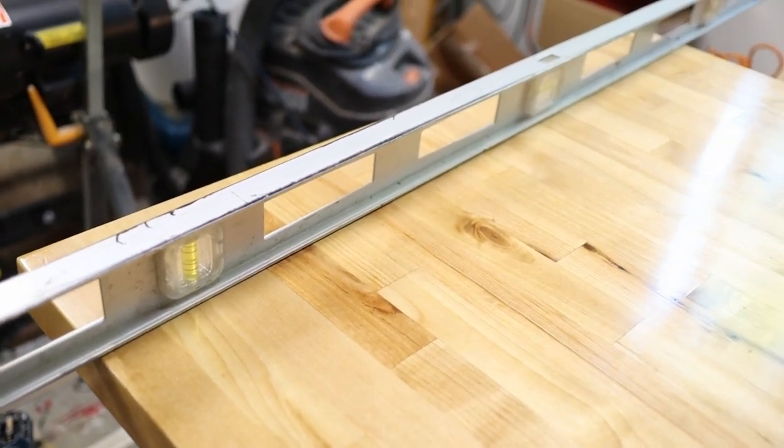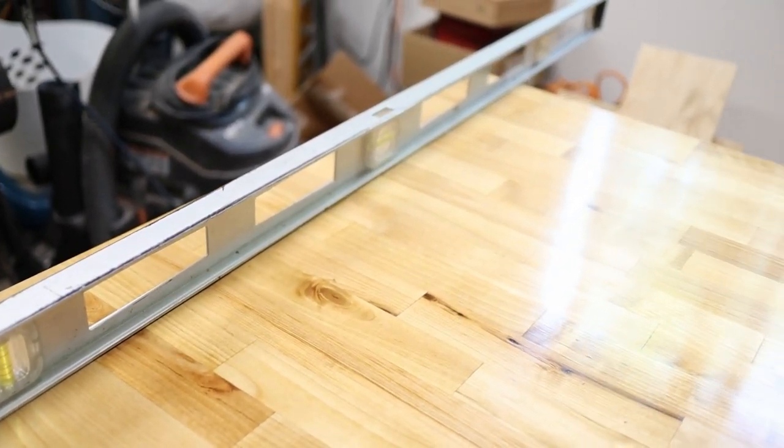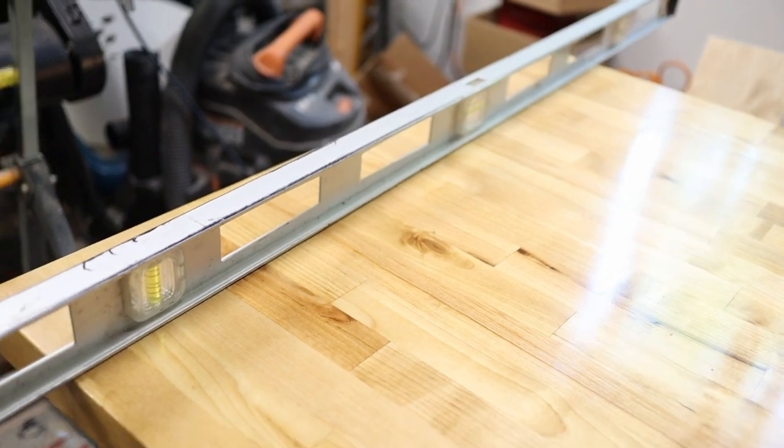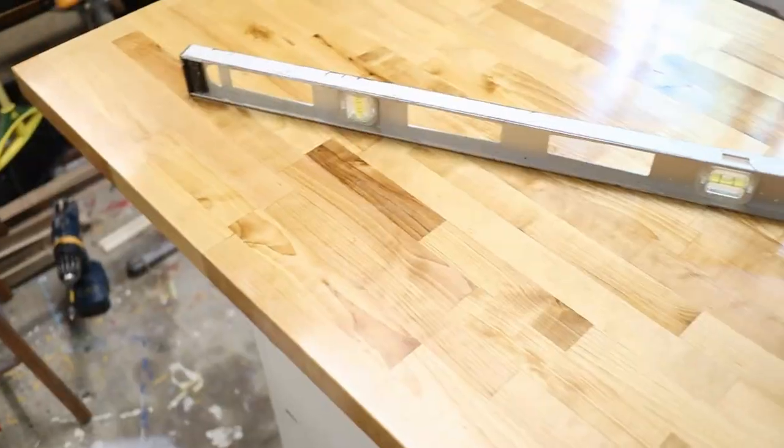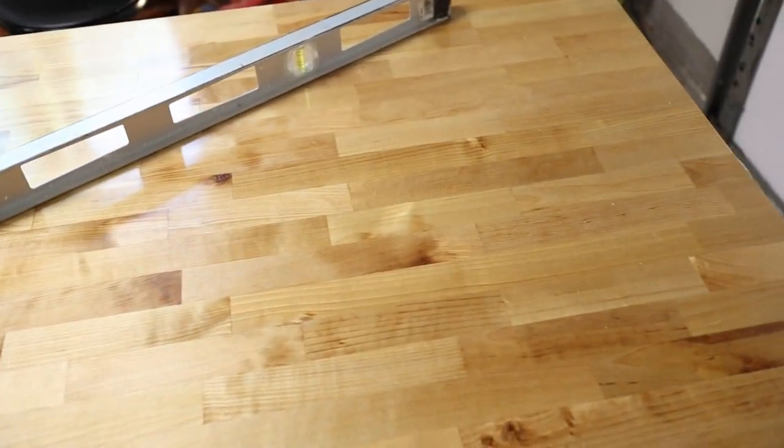Now the trick to leveling a cabinet or a workbench is to take measurements in all directions. Going from side to side, from front to back, and also diagonally for good measure. When your bubbles agree from all sides to your satisfaction, then your surface is level.